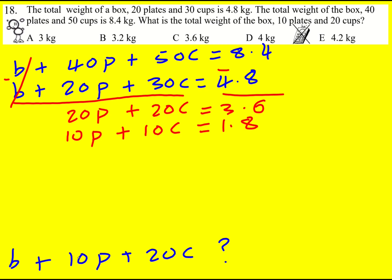Now does that help at all? I'm trying to get this. Well I can actually now see that if I take this equation B plus 20P plus 30C equals 4.8, then I'm going to minus 10P plus 10C which is 1.8. And I'll get exactly what I wanted.